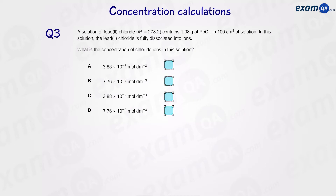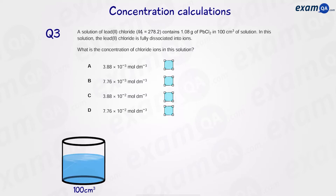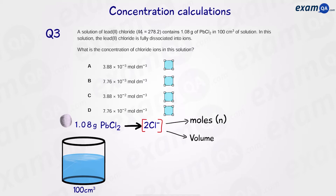Moving on to question three: what is the concentration of chloride ions in this solution? We have a 100 cm³ solution and we placed 1.08 grams of lead chloride in it. Lead chloride has two chloride ions in its formula. To work out concentration we need moles and volume. We already know the volume — 100 cm³ — however we haven't been given the moles of chloride ions, so let's work out the moles of lead chloride first.